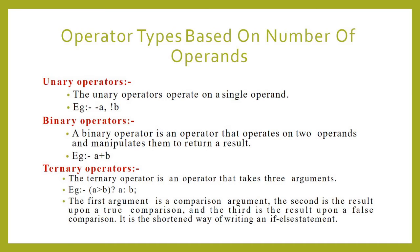Ternary operators. A ternary operator is an operator that takes three arguments. In C, the conditional expression or conditional operator can be considered as a ternary operator.